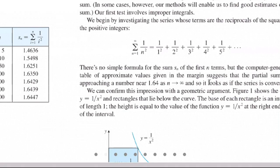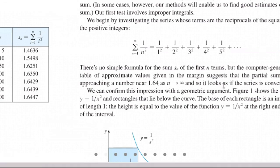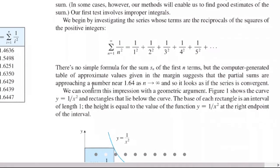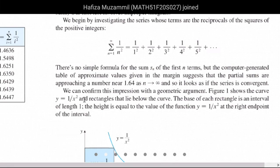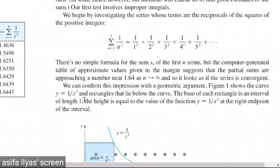As we look at the partial sums approaching 1.64, it looks as if the series is convergent. We can confirm this with a geometric argument. Figure 1 shows the curve y = 1 over x squared, because we apply the integral test — so we convert our series into this function for integration.